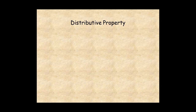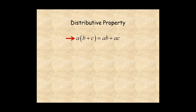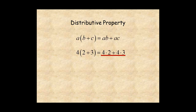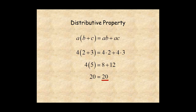The final postulate is the distributive property, which says you can multiply across the sum. This is not an obvious property, but it's easy to see that it's true. For example, four times two plus three should be the same as four times two plus four times three. On the left, four times two plus three is four times five, which is twenty. And on the right, four times two plus four times three is eight plus twelve, which is also twenty. Later in this series of lessons, you'll learn a lot more about the distributive property.